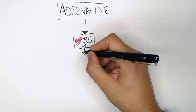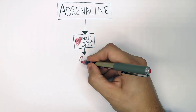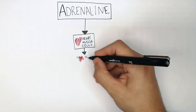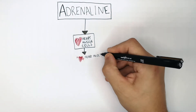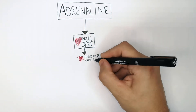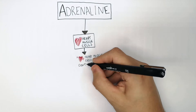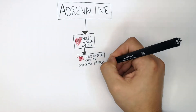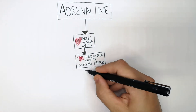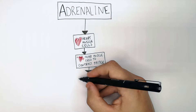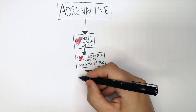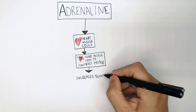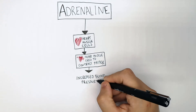Adrenaline causes the heart muscle cells to contract more quickly, so the heart muscle cells contract faster. This increase in contraction will cause an increase in blood pressure.